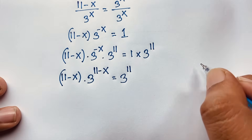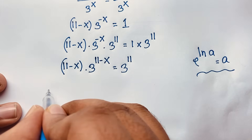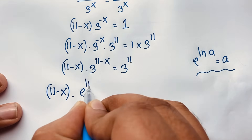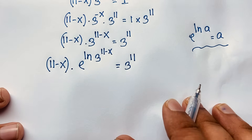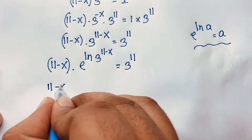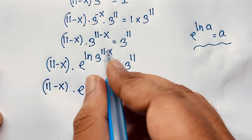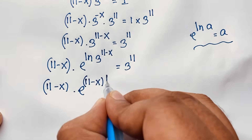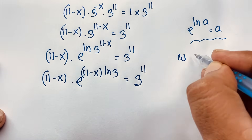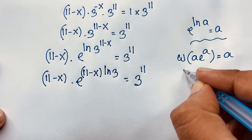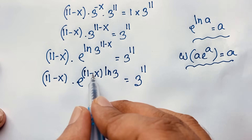Now at this moment: 11 minus x times e to the power x times e to the power ln 3 — it will be 3 to the power 11 minus x — is equal to 3 to the power 11. Now 11 minus x times e to the power ln 3 gives 11 minus x times ln 3, and here is 3 to the power 11. Now according to the Lambert W function formula, using e to the power ln a equals a.